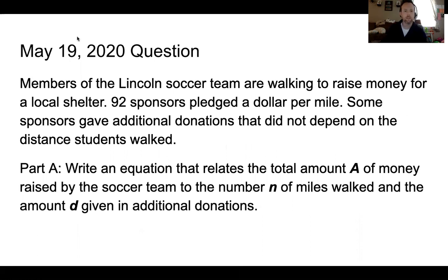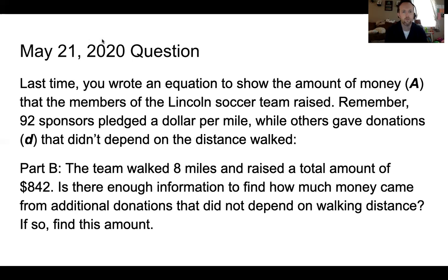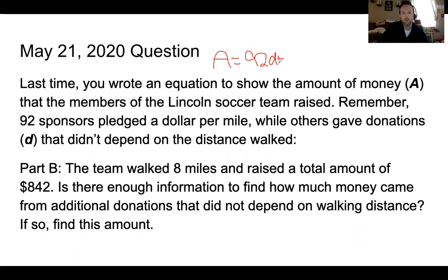I'm going to skip ahead to today's question because you're going to be using that equation and I want you to see how you're using it. So it asks you to write an equation — remember an equation is a number sentence: blank equals something. The amount of money A that members of the Lincoln soccer team raised: 92 sponsors pledged a dollar per mile, so we use 92N for number of miles, plus donations D, and we have no idea how much was given.